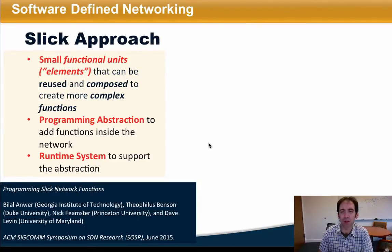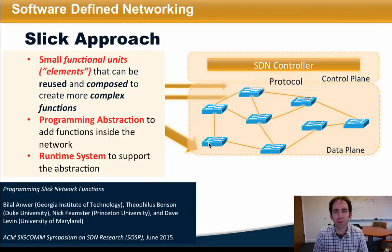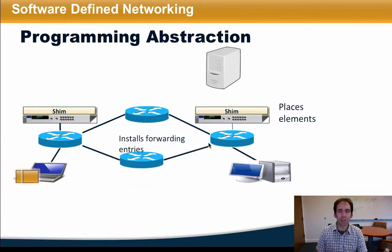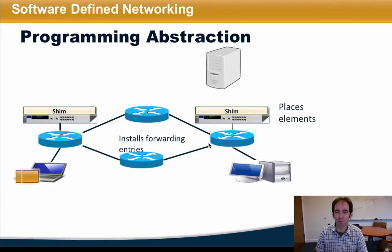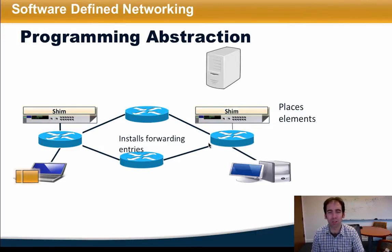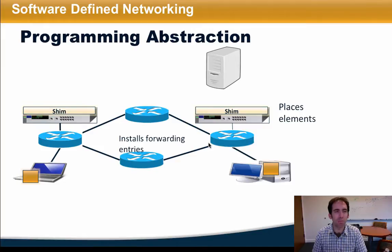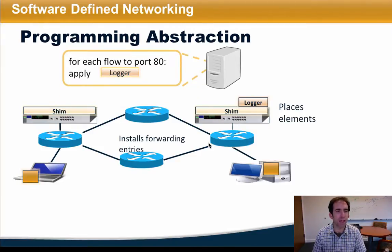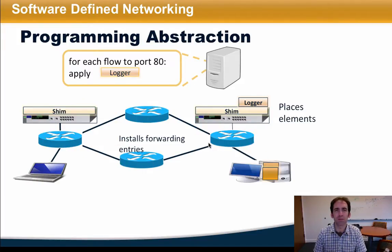SLIC provides a programming abstraction and a runtime system that supports that abstraction. The SLIC programming abstraction allows an operator to define applications and elements. A network operator writes the application using an existing repository of elements and defines how different flows should be forwarded through chains of these elements. The runtime then handles when and where to install the elements, as well as how to send the traffic through specific instances of these elements. For example, ordinary network traffic might be forwarded along one path, but an operator might specify that each flow to port 80 should be sent through some logger element. The controller is then responsible for placing that element on a particular node in the network and installing forwarding entries in the switches so that traffic destined for port 80 is forwarded through the appropriate elements.